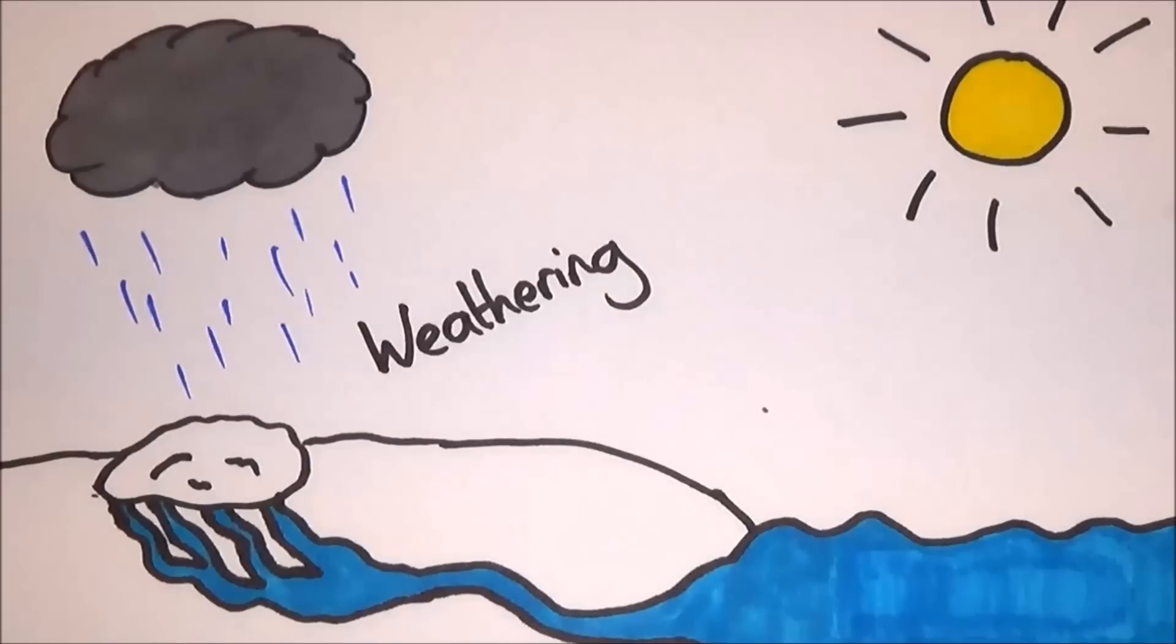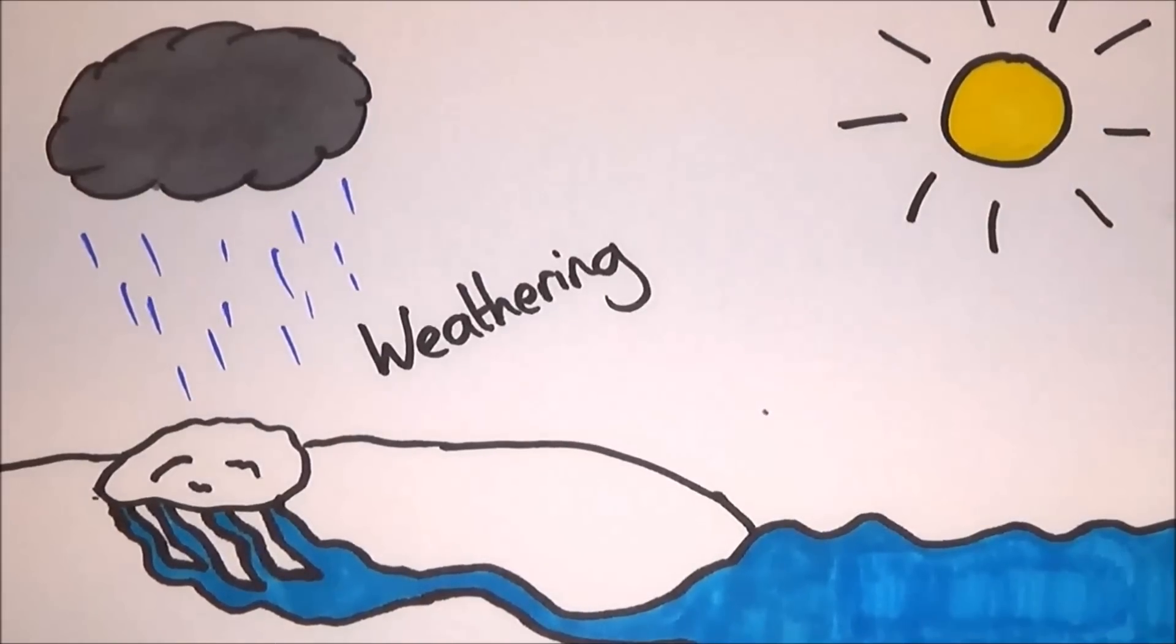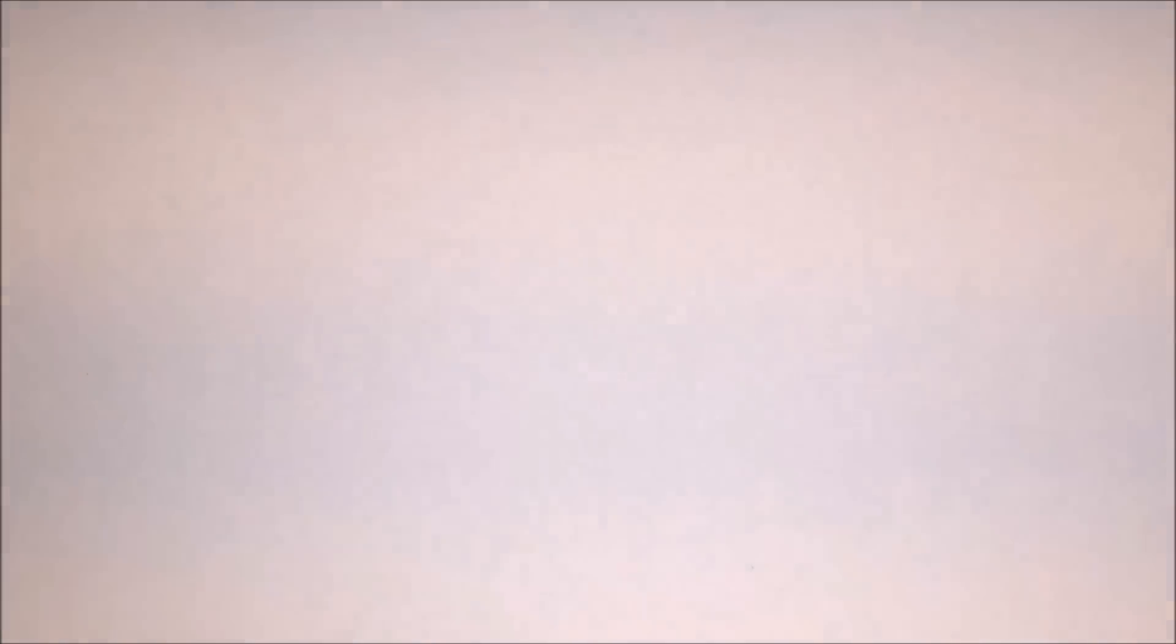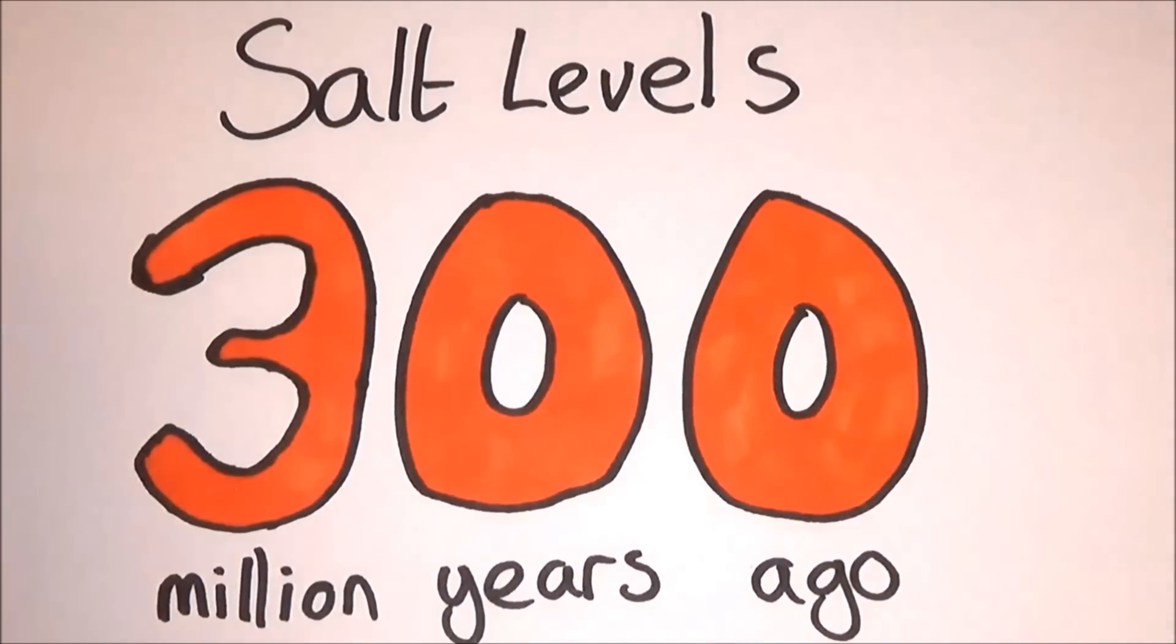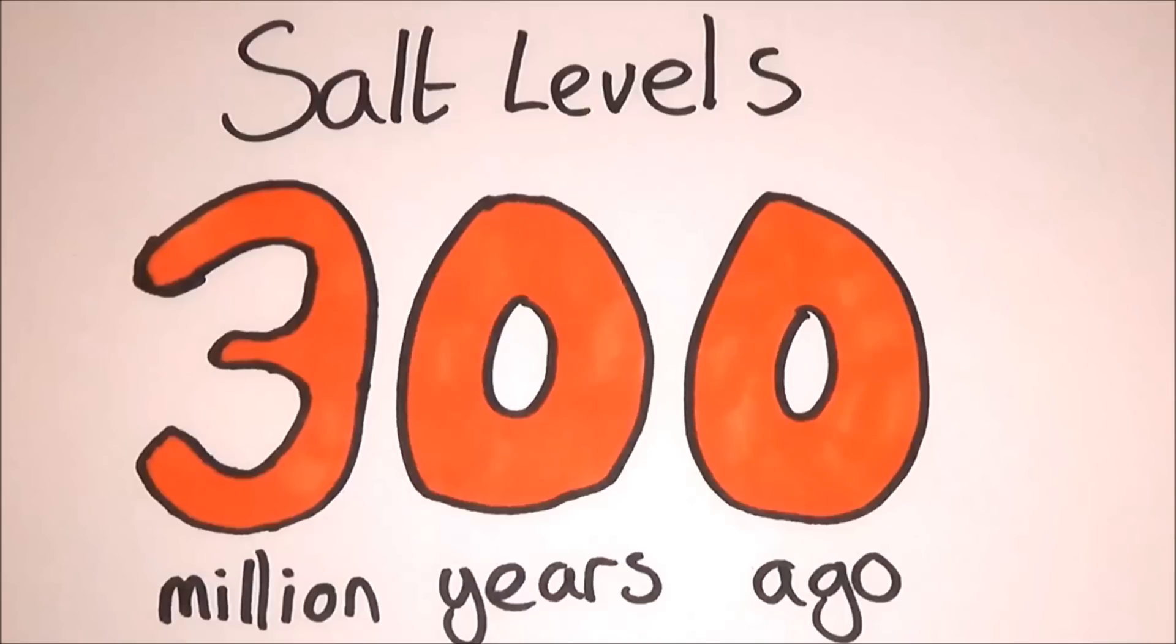This water will then make its own way into streams and rivers and into lakes and oceans. It is reckoned that the dissolved salt levels in the world's rivers today would be equal to what the oceans were 300 million years ago.